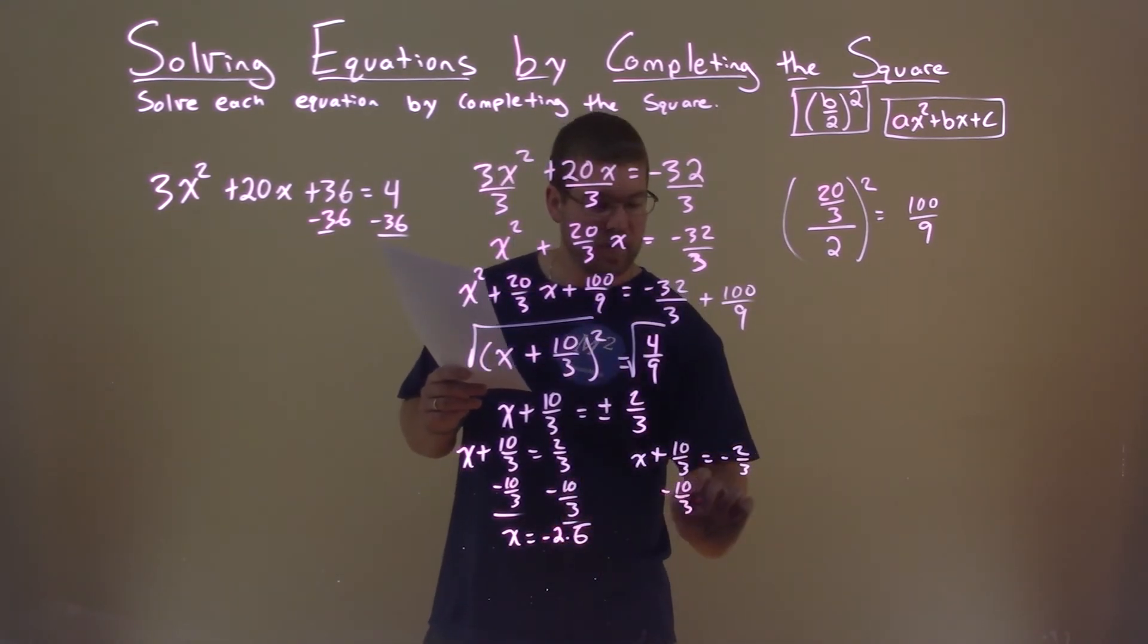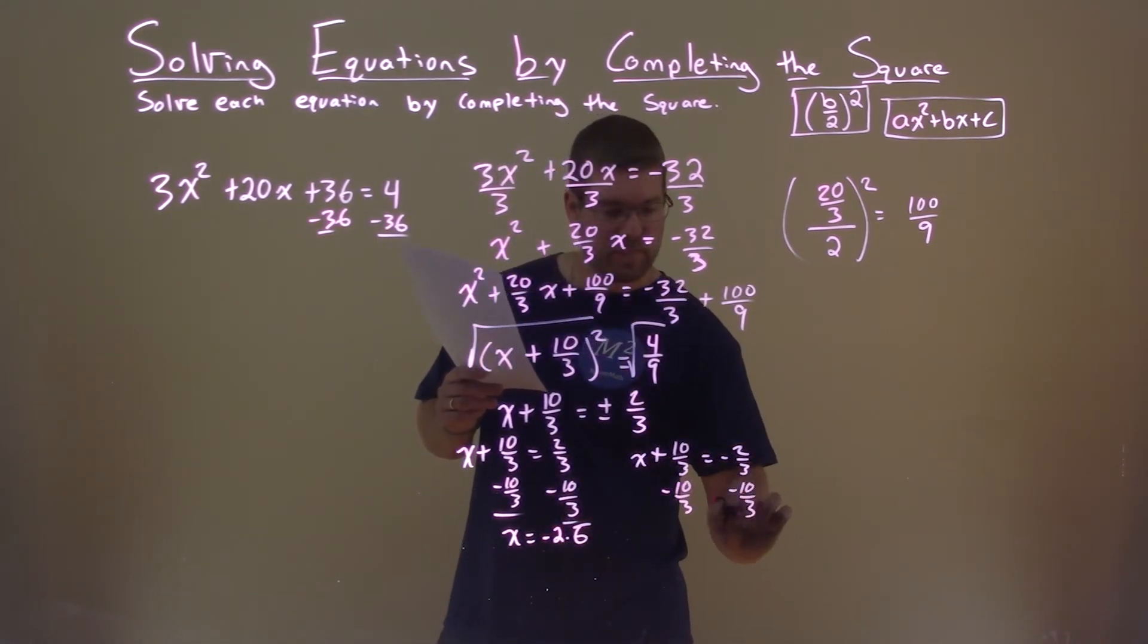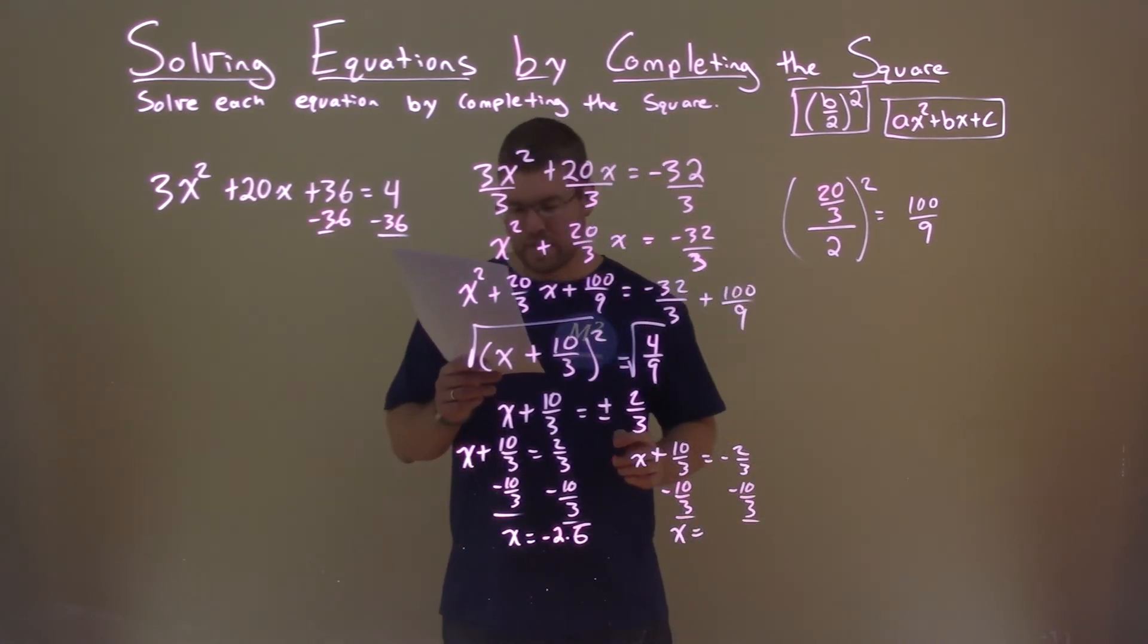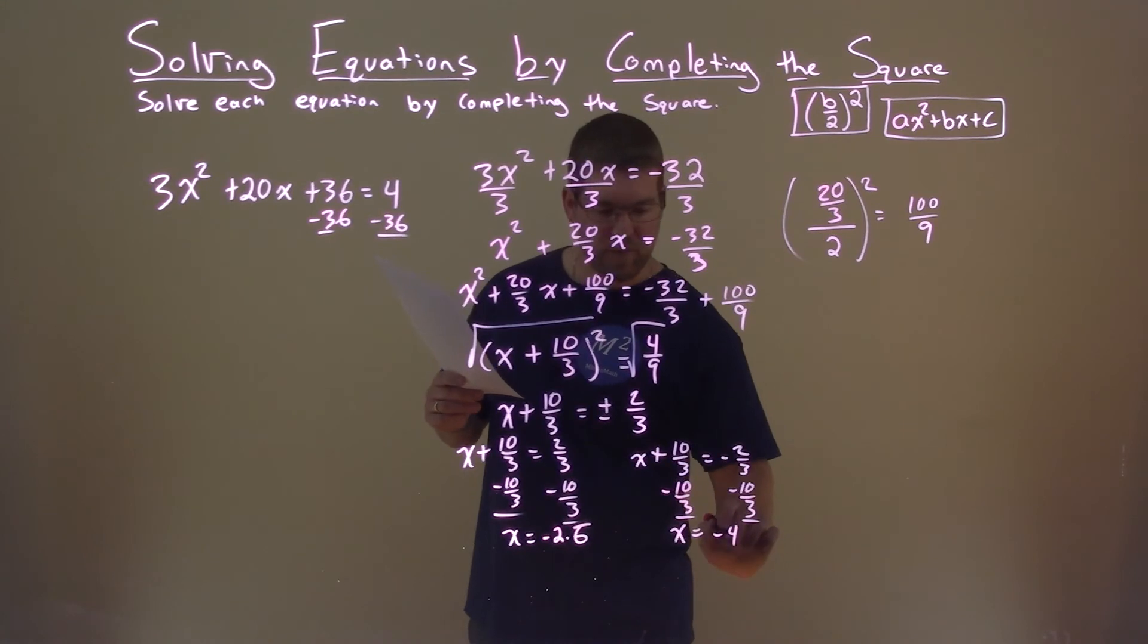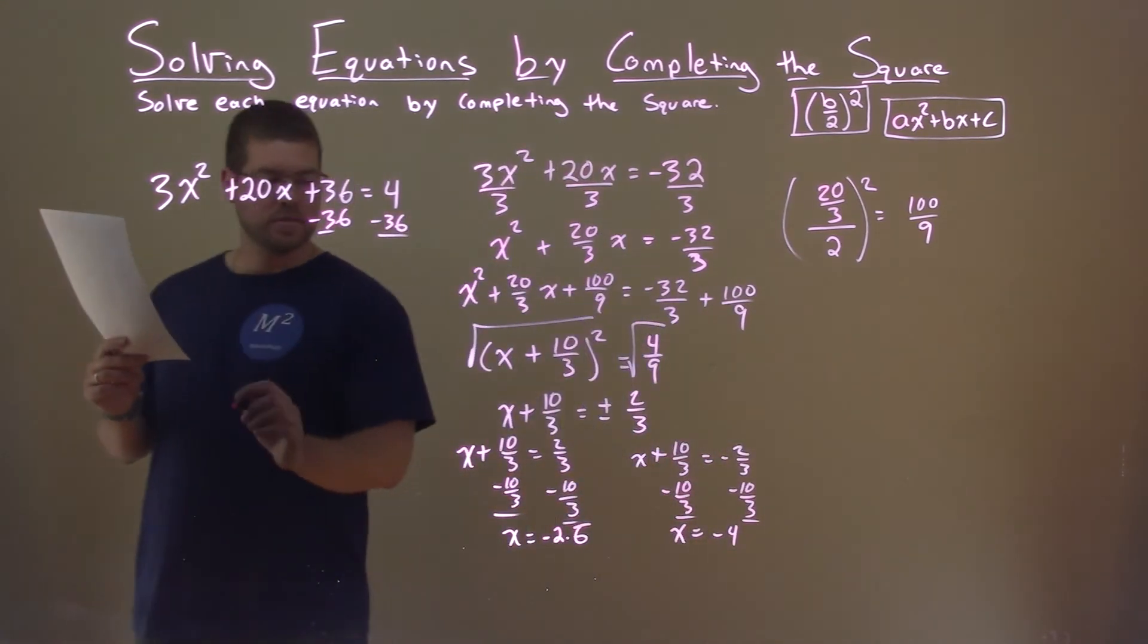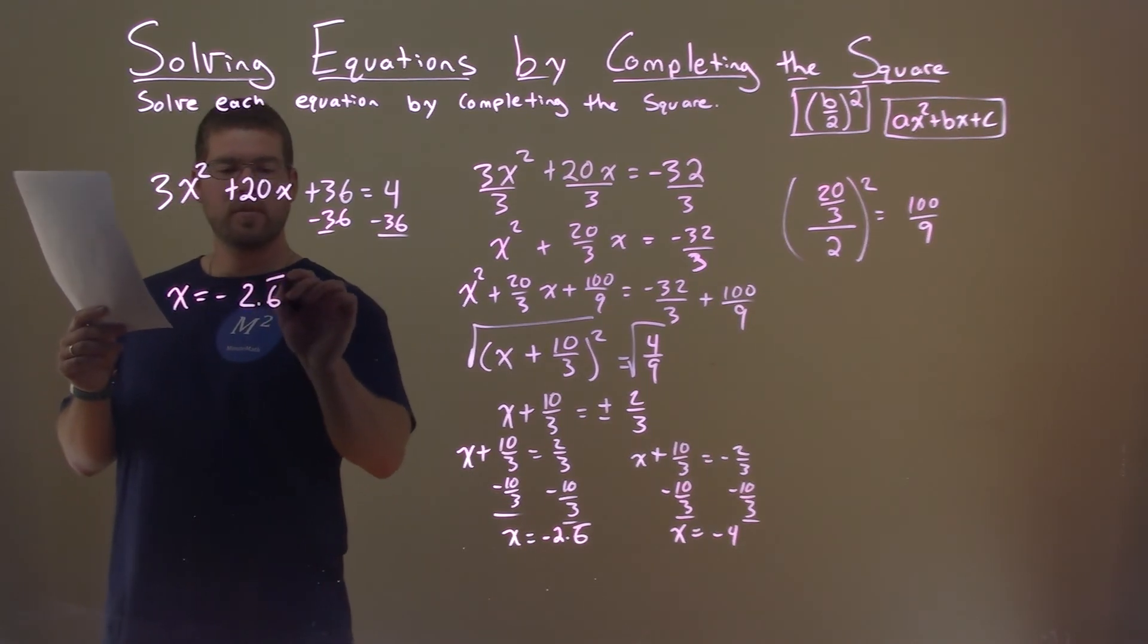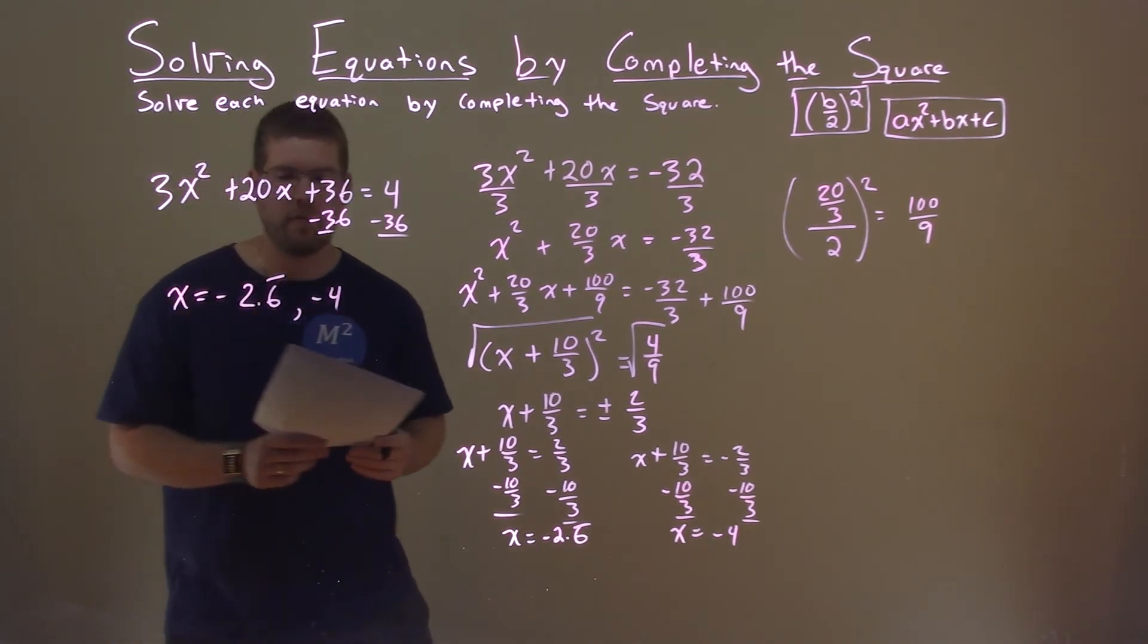Subtract the 10 thirds here. And x equals negative 2 thirds minus 10 thirds is negative 4. So our two solutions are x equals negative 2.6 repeating and negative 4.